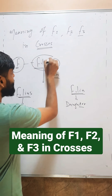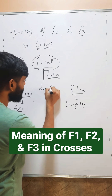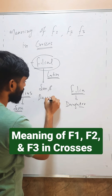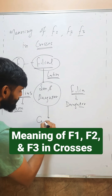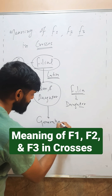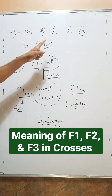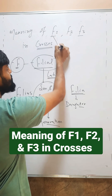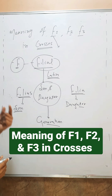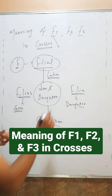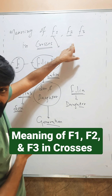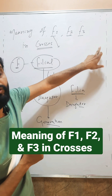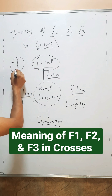So filial here means son and daughter, or you can say generation. So F here means generation. When we are talking about F1, it means first filial generation — first son and daughter. F2 means second son and daughter, F3 third son and daughter. Or you can say this is the first generation of a cross, second generation of a cross, and third generation of a cross. So F means filial.